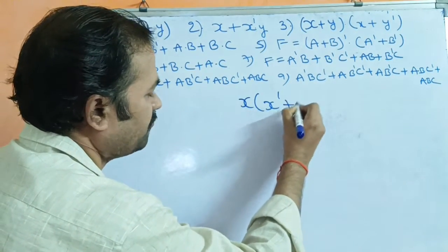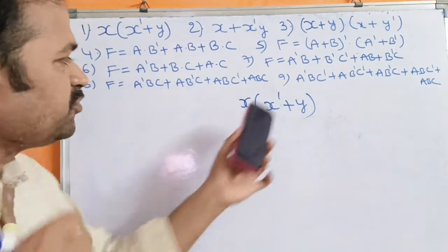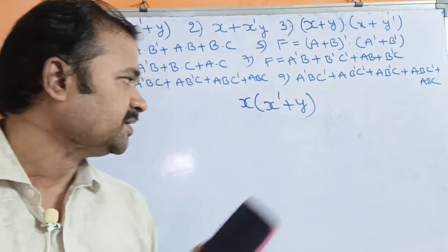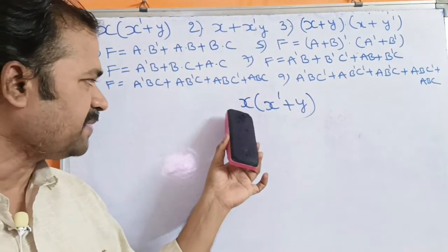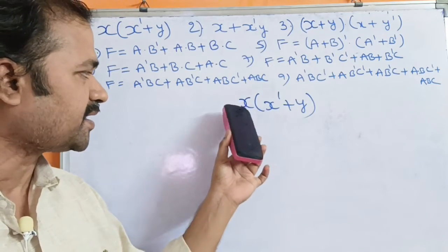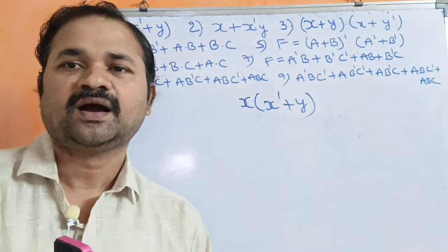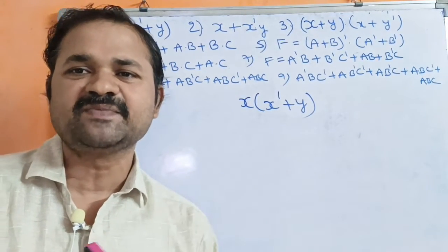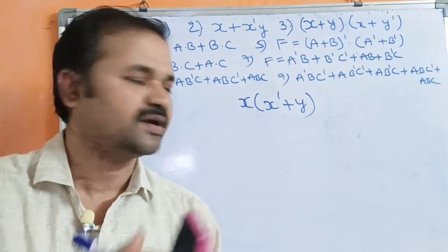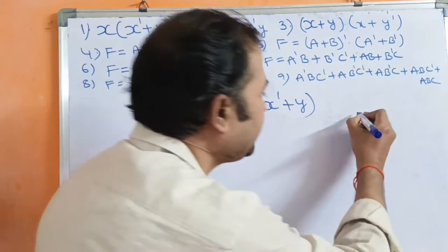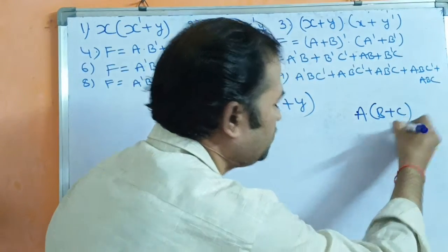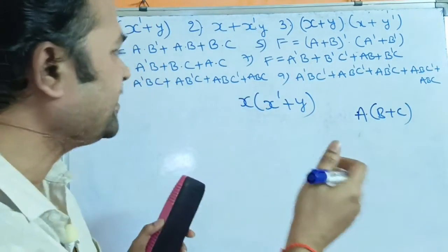We have to simplify this expression. We can multiply X with X̄ and X with Y — this is nothing but the distributive law. We know the distributive law: A(B+C) = AB + AC.